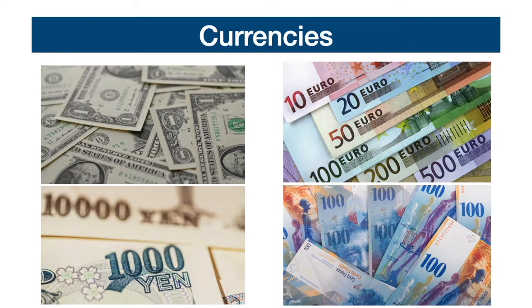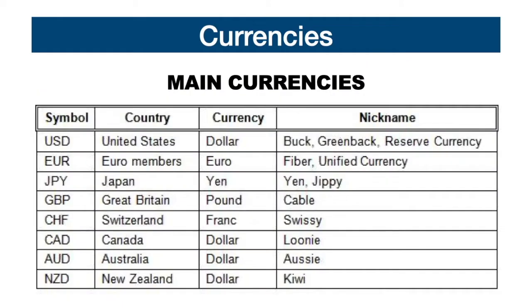The forex market is based on the buying and selling of currency pairs. Before studying the various currency pairs, we must analyze which currencies are available to trade in this market. In the forex market, currency trading has the simplest regulations and the greatest overall liquidity. The main currencies with the greatest trading activity are the US dollar, the euro, the British pound, the Japanese yen, the Swiss franc, the Canadian dollar, the Australian dollar, and the New Zealand dollar.